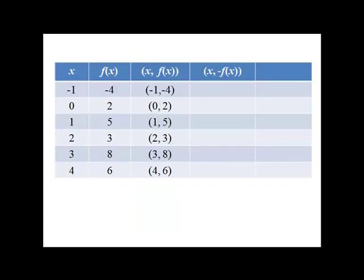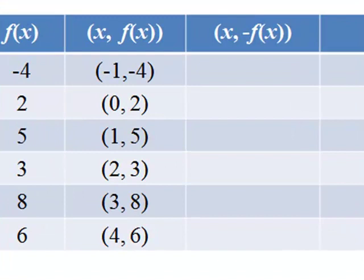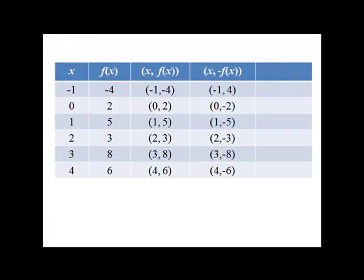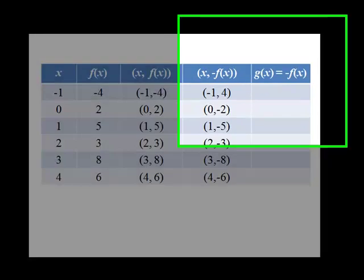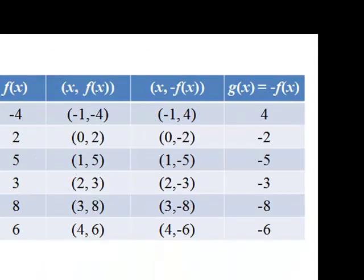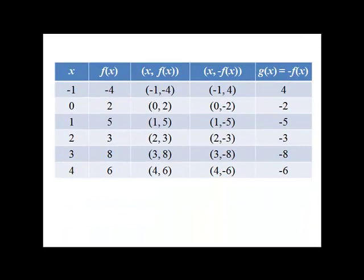So the points that we have on that reflection are x, negative f of x. So a function that's been reflected across the x-axis would have the form negative f of x, because it would have all the outputs that are exactly negative what f of x would have.